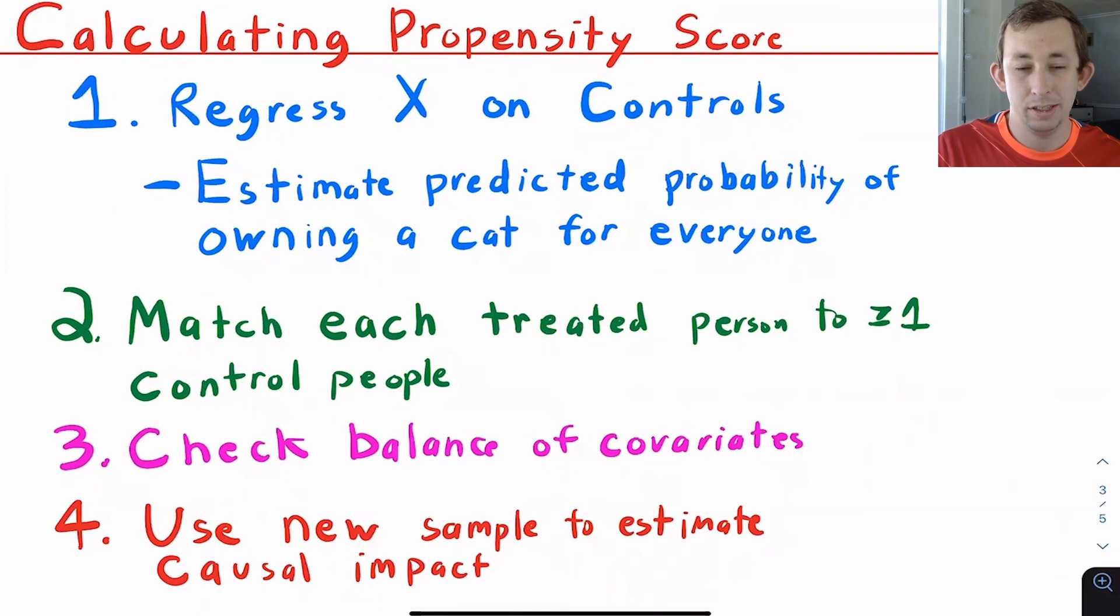So their propensity score, their likelihood of being treated given their controls is 0.6. And then what we're going to do is we're going to take each treated person, we're going to match them to one or more people in the control group based on those propensity scores.